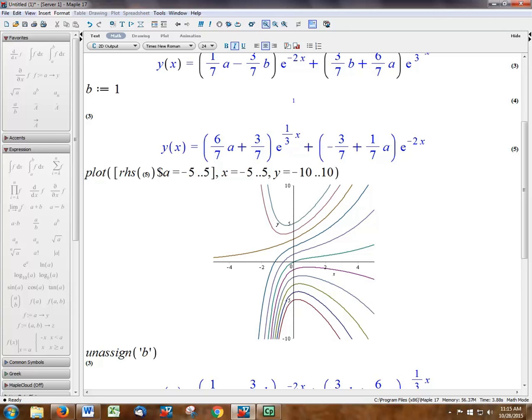And you can see all the solutions. You can see every initial condition. The function has to go through that initial condition. So here's initial condition equal five, initial condition equal four, three, two, one, zero, minus one, minus two,